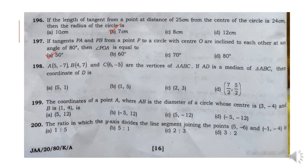Question 198: A, B, C are the vertices of triangle ABC. If AD is the median of triangle ABC, then the coordinate of D is (5, 1). Option A. Question 199: The coordinates of a point A where AB is the diameter of a circle with center (3, minus 4) and B is (1, 4) — the answer is Option C.